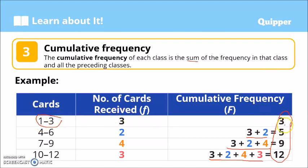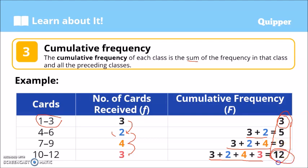Starting from 1–3, that's 3. Then add the next frequency: 3 plus 2 is 5. Then 5 plus 4 is 9. Then 9 plus 3 is 12. Notice that the last cumulative frequency value is actually the sum of all the frequencies. That's the cumulative frequency column.